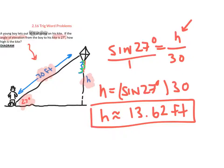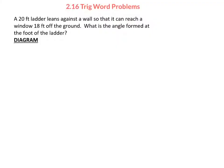The tricky thing is making the diagram. So let's practice with the ones we already did. This one speaks about a ladder leaning against a wall that reaches a window at 18 feet, and what we want is the angle. We need to translate that into a right triangle.